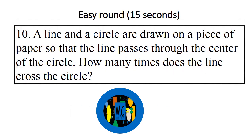Question 10: A line and a circle are drawn on a piece of paper so that the line passes through the center of the circle. How many times does the line cross the circle? Go!